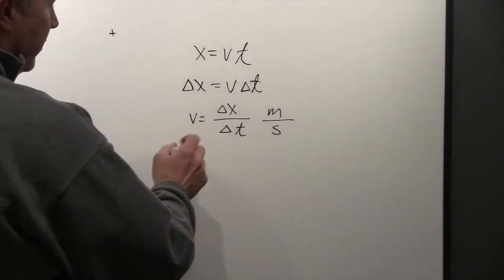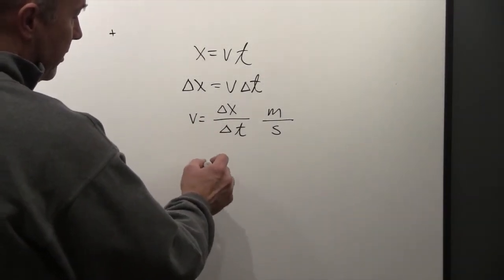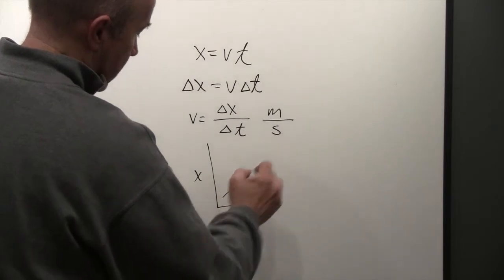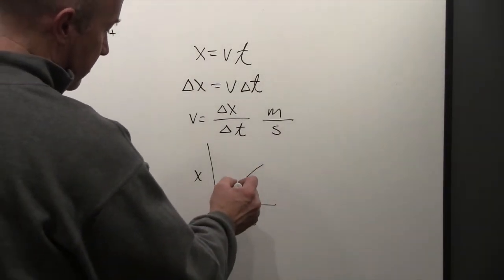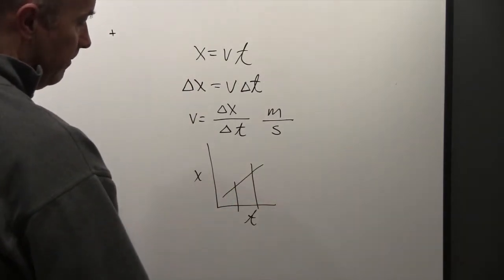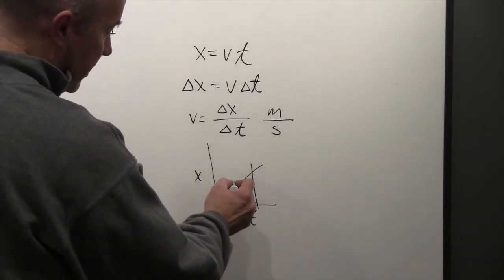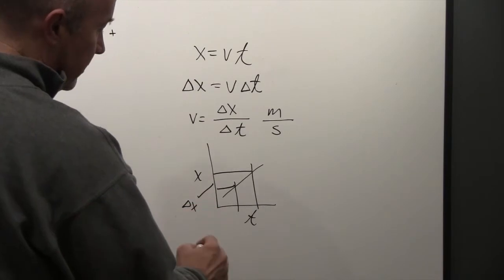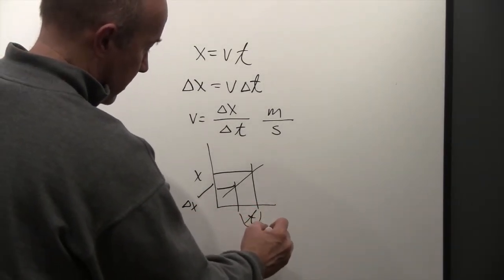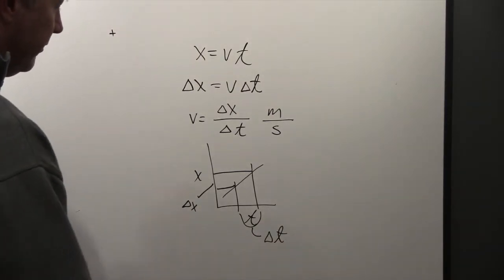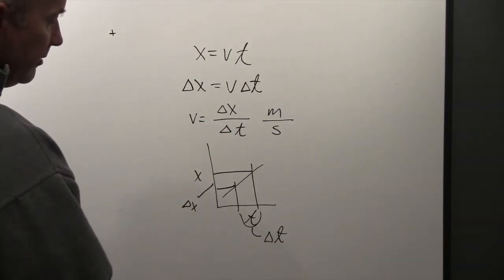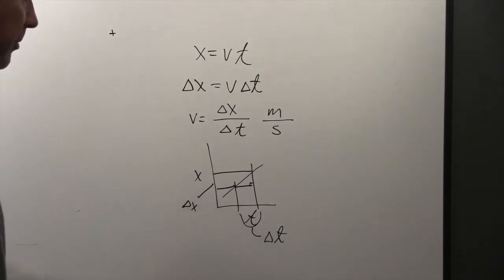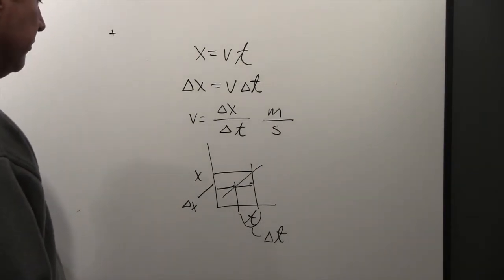You can rearrange this: velocity is really the change in distance, delta x, over delta t. That makes sense because if distance is measured in meters, then velocity is in meters per second — it's how much change in meters you had over the change in time. If you have a plot of x versus time and you want to know velocity between two points, you find delta x divided by delta t, which is more commonly known as the slope. So the slope of the x versus time plot is your velocity.